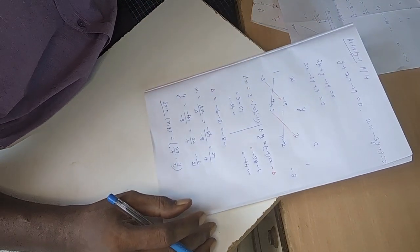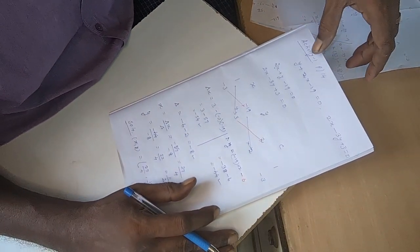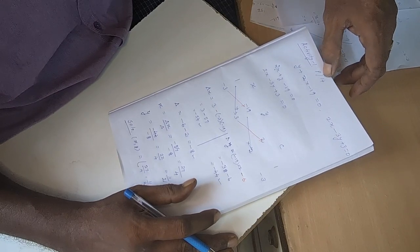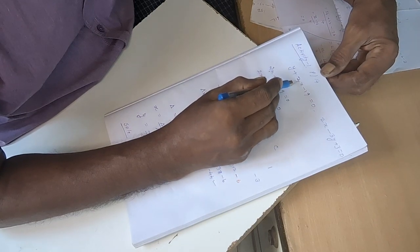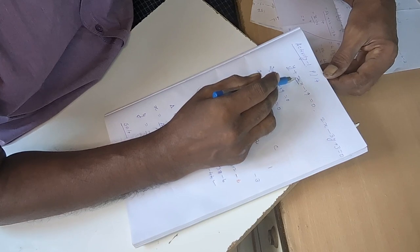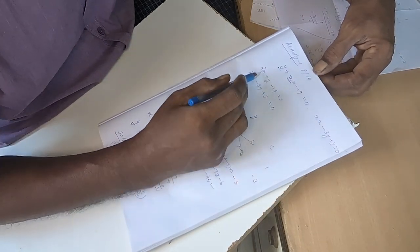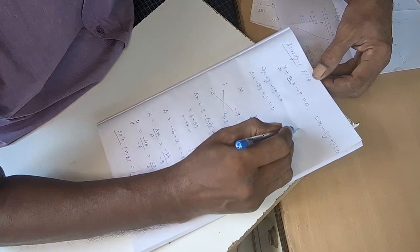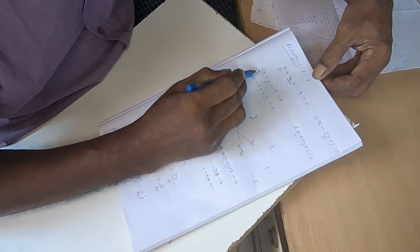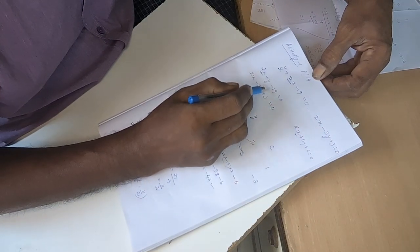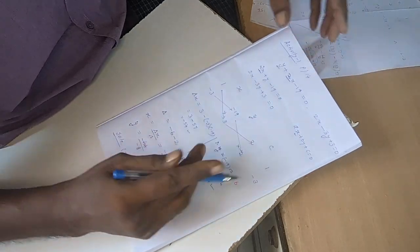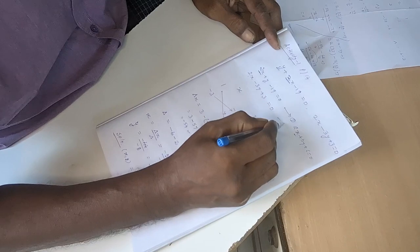This problem from 10th standard book, Maharashtra State Board, activity 1, found on page number 14, has the x term and y term interchanged. We just rearrange it to the general form. The general form of the equation is ax plus by plus c equal to 0, with x first. So 2x, then y, then constant equal to 0. 2x minus 3y, then constant equal to 0. This is equation 1 and this is equation 2.